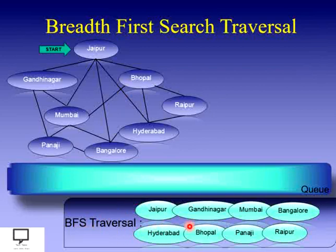The BFS traversal for the given graph is: Jaipur, Gandhinagar, Mumbai, Bangalore, Hyderabad, Bhopal, Panji, and Raipur. In this way we can traverse the graph using breadth first search traversal.